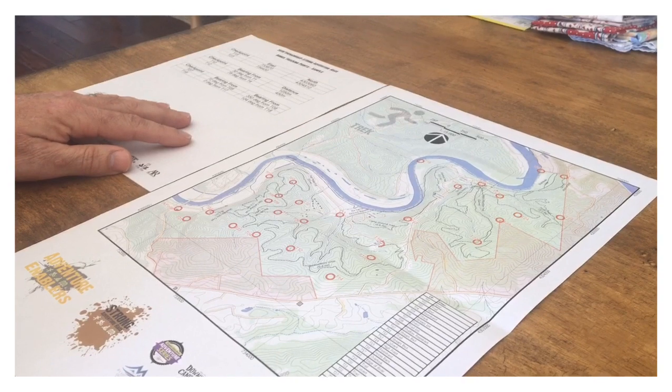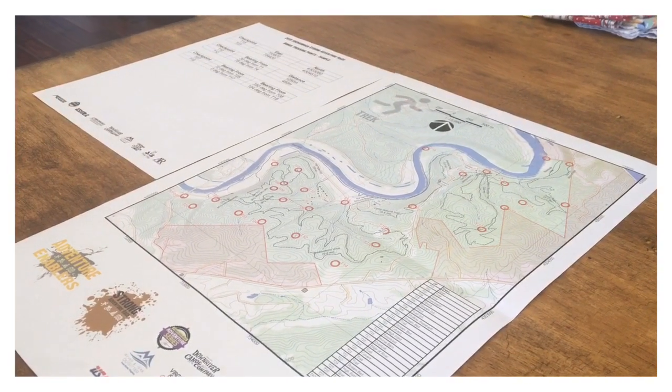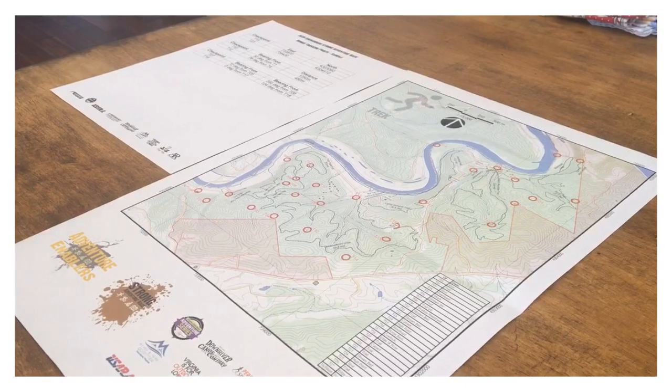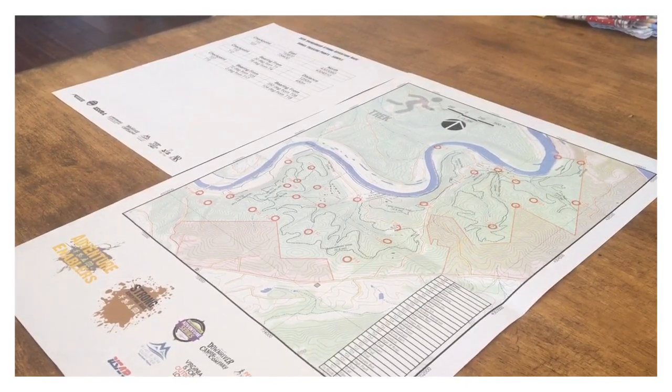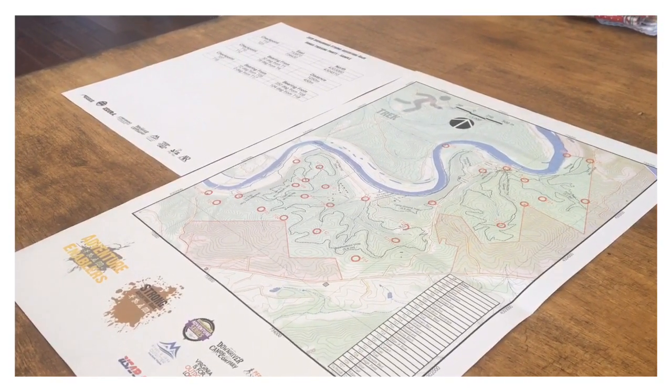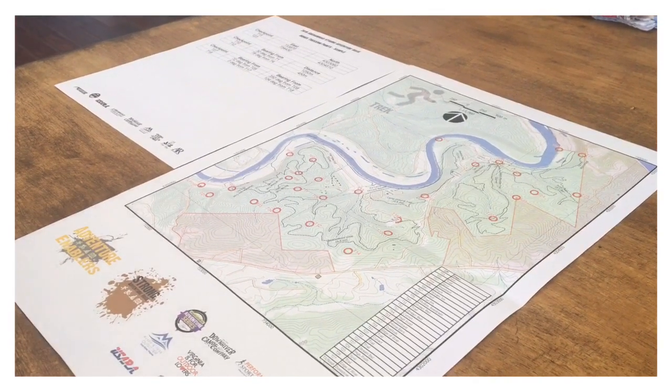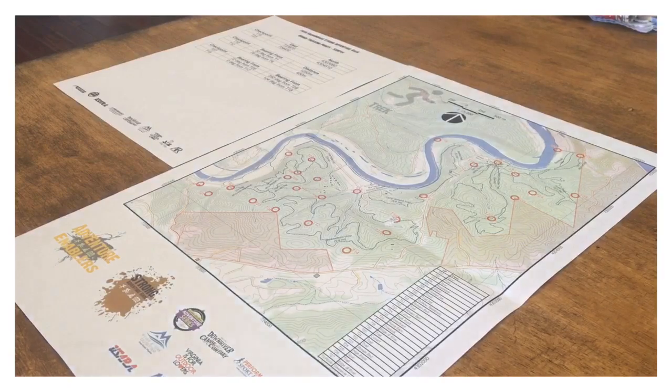We're going to do a quick demonstration on how to plot the bonus points for the Shenandoah Strong. There's three different ways you're going to have to do it: by UTM, by bearing and distance, and also by bearing and bearing. I'm just going to run through each method on how you can do that.